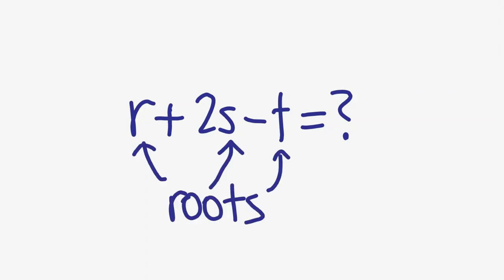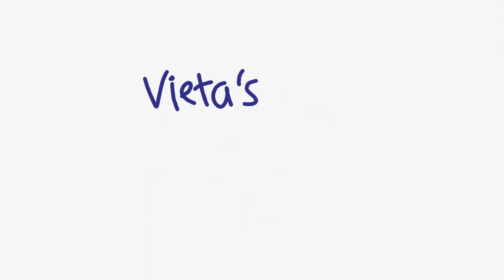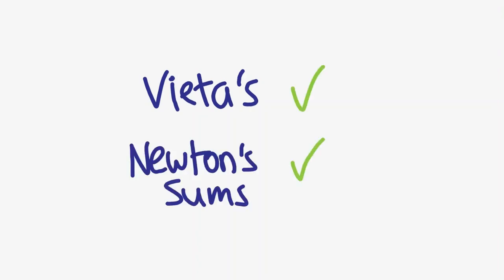Many times in math competitions, problems will ask you to find the value of some expression that includes the roots of a polynomial. Sometimes Vieta's formulas are the way to go, but in some cases we can use something called Newton's sums. The proof is based off of Vieta's, but having a formula handy is usually better than having to derive one during a math test.